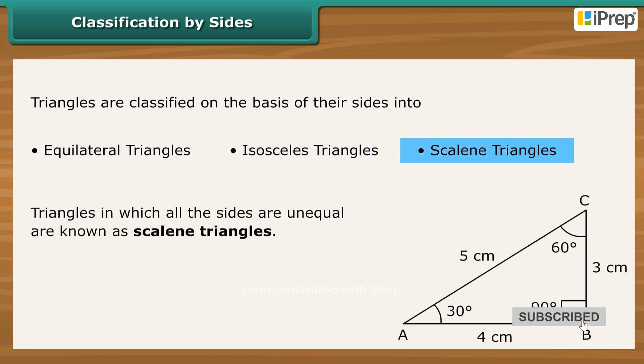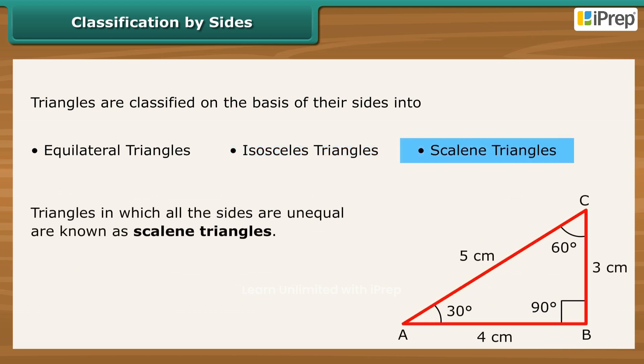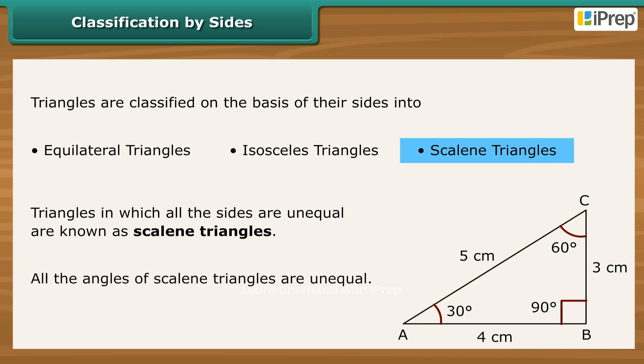Triangles in which all the sides are unequal are known as Scalene Triangles. All the angles of Scalene Triangles are also unequal.